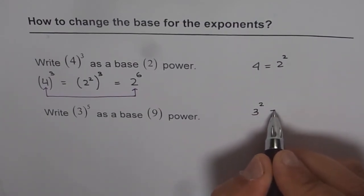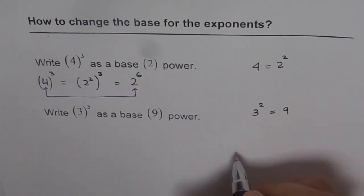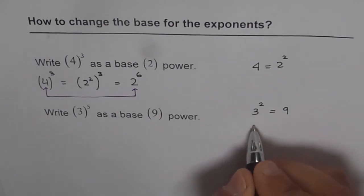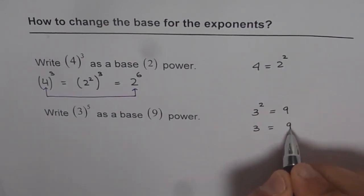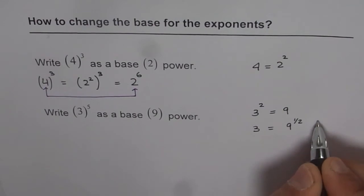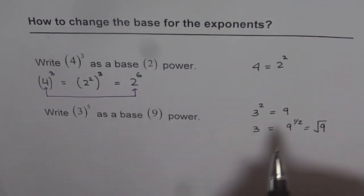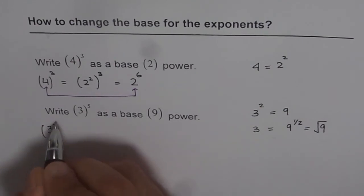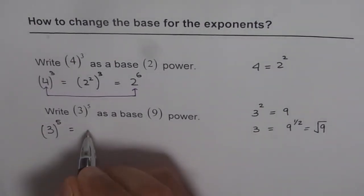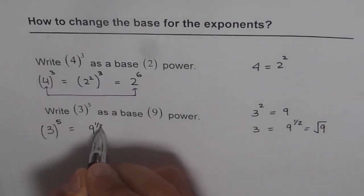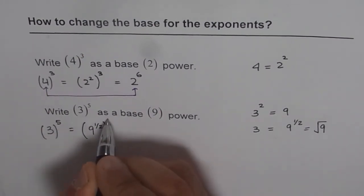Now, 3 square is actually equals to 9. So, 3 is actually equals to 9 to the power of half. Or you can say square root of 9 is 3. Either way. So when we are talking about exponents, it's better to use 9 to the power of half. And so, we can write this as 3 to the power of 5 equals to 9 to the power of half to the power of 5.